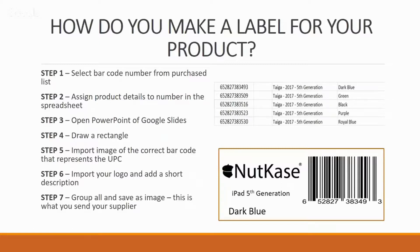You can see I've got 'iPad 5th Generation, Dark Blue.' So I've not just identified it with a particular number — I've now associated the iPad 5th Generation dark blue to this number. Step seven: group all and save as image. That image is what you send your supplier. In this particular case, the supplier asked for a PDF, so I generated all of these on one sheet and sent it over as a PDF.